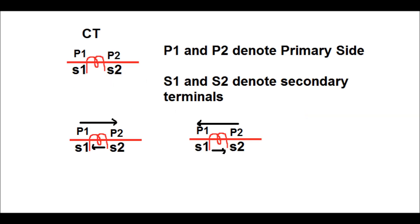The symbol of the current transformer is shown in the picture above. P1 and P2 are the two terminals for the primary side of the CT, and S1 and S2 are the secondary terminals. When current flows from P1 to P2 in the primary side, due to transformer action, the current will flow from S2 to S1 in the secondary side. Similarly, when current flows from P2 to P1 in the primary side, the secondary current flows from S1 to S2.